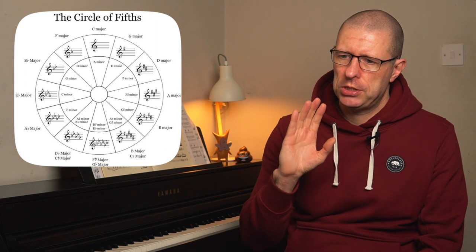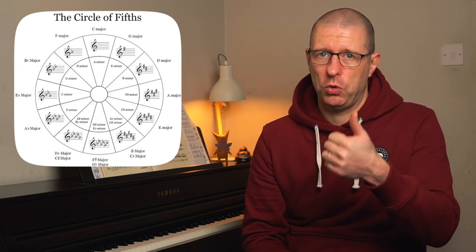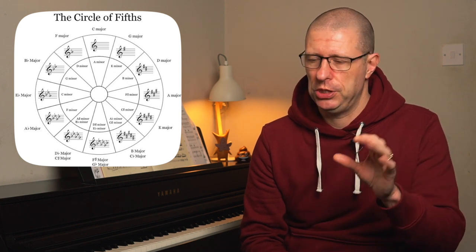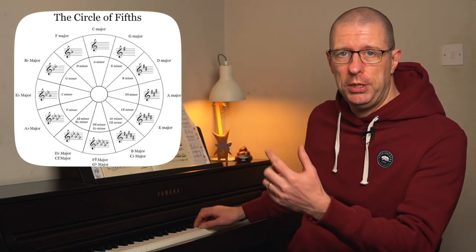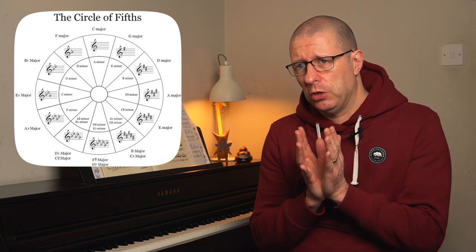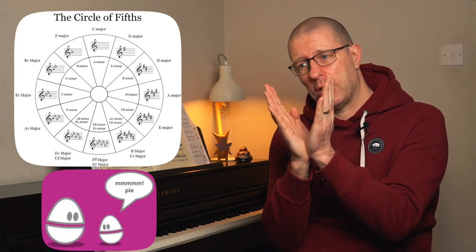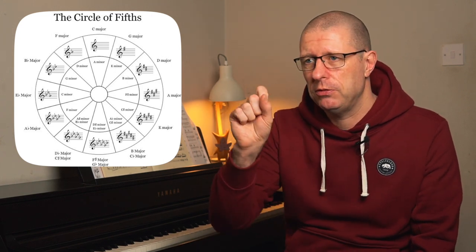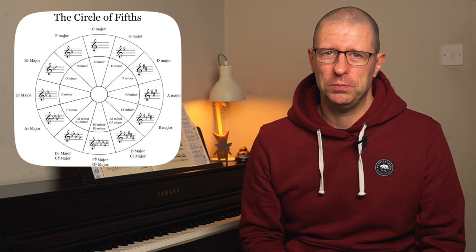Once you're working on theory you'll learn about primary chords. If you look at the circle, the primary chords are chords one, four and five. Chord one is the tonic — the root note of the key, so in C major that's C. Chord four is the fourth degree: one, two, three, four — which is F. Chord five is the fifth degree — which is G. What's clever about the circle of fifths is that chords one, four and five form almost a pie-slice on the chart, sitting right next to each other, and that works for all 12 keys, making it really easy to identify them.